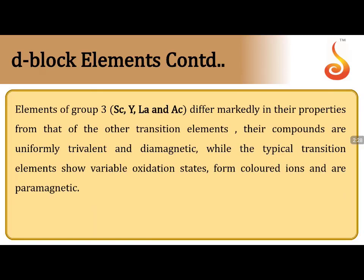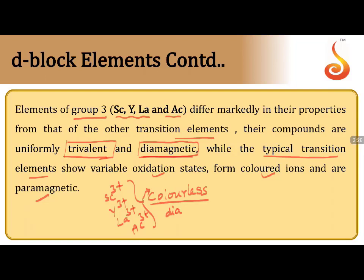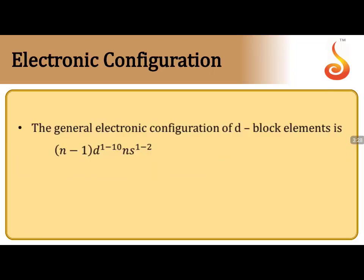The elements of group 3 — scandium, yttrium, lanthanum, and actinium — differ markedly from other transition elements. Their compounds are uniformly trivalent and diamagnetic. They don't exhibit any color. Typical transition elements show variable oxidation states, color-exhibiting property, and are paramagnetic. But Sc³⁺, Y³⁺, La³⁺, Ac³⁺ are colorless, diamagnetic, and trivalent — this is a very important point.